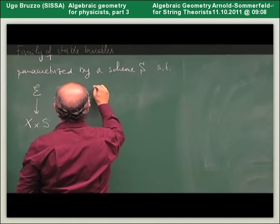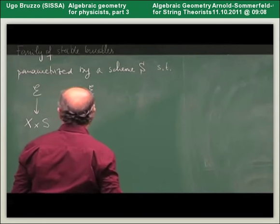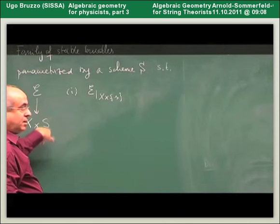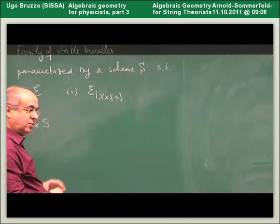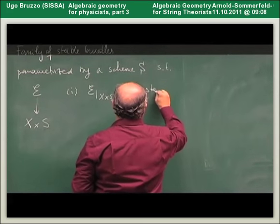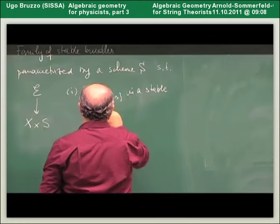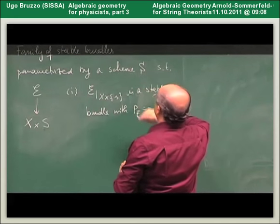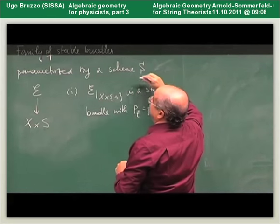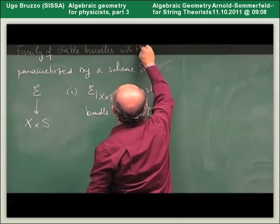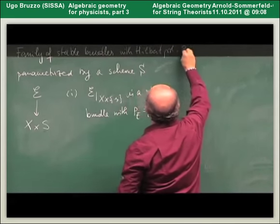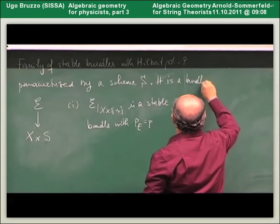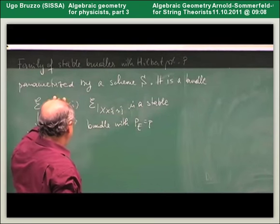The second property is technical: E is flat over S, meaning it behaves very well with respect to the projection over S. Basically a family of stable bundles parametrized by a scheme S is just a bundle on the product such that when you restrict to a fiber you get the object you are interested in.